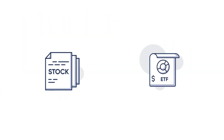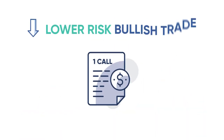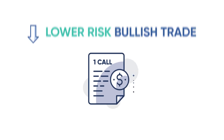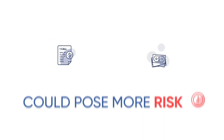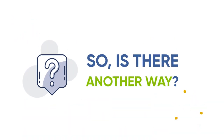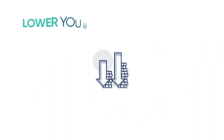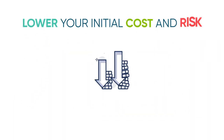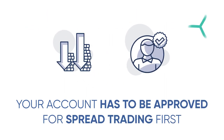When you're bullish on a stock or ETF but don't want to risk buying shares outright, you could look to buy a call option for a lower risk bullish trade. However, even call options can get pretty expensive and could pose more risk than you're comfortable with. So, is there another way? Yes — you could buy a bull call spread and lower your initial cost and risk, but your account has to be approved for spread trading first.